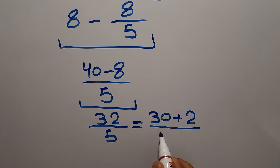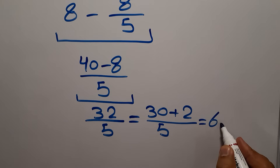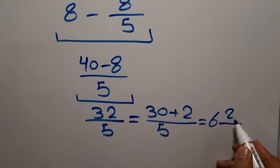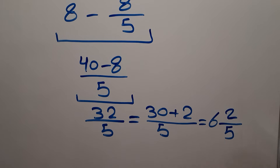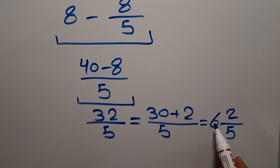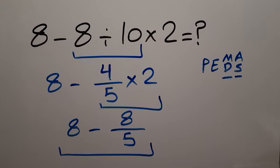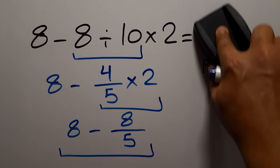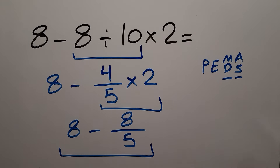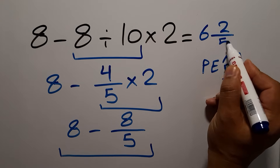Now let's convert this improper fraction to a mixed number. 32 can be written as 30 plus 2 over 5. 30 divided by 5 gives us 6, so the answer is 6 and 2 over 5. Therefore our final answer to this problem is 6 and 2 over 5.